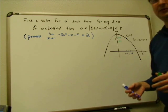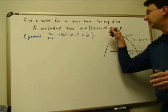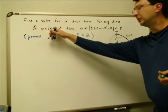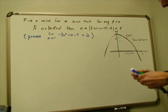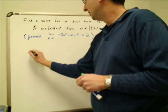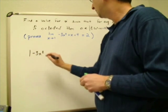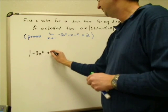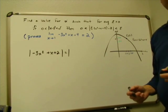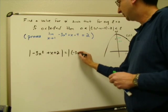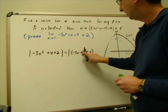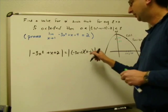For these types of limit proofs, we start by working with the inequality until we get the absolute value of x minus one involved — that's the key trick. Starting with the absolute value of f(x) minus L, when I simplify it becomes the absolute value of negative three x squared plus x plus two. With a little factoring, this factors down to the absolute value of negative three x minus two times the quantity x minus one.